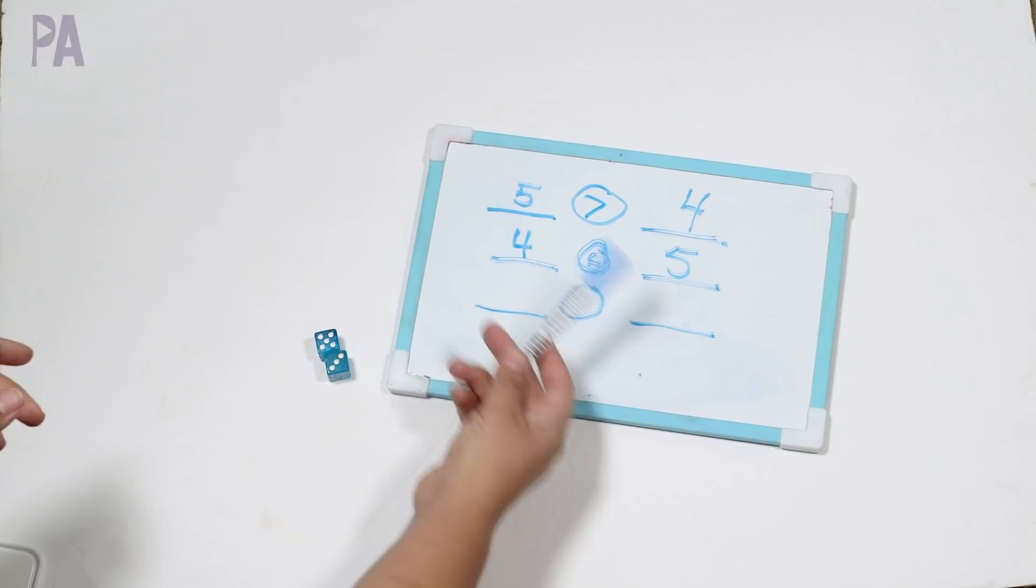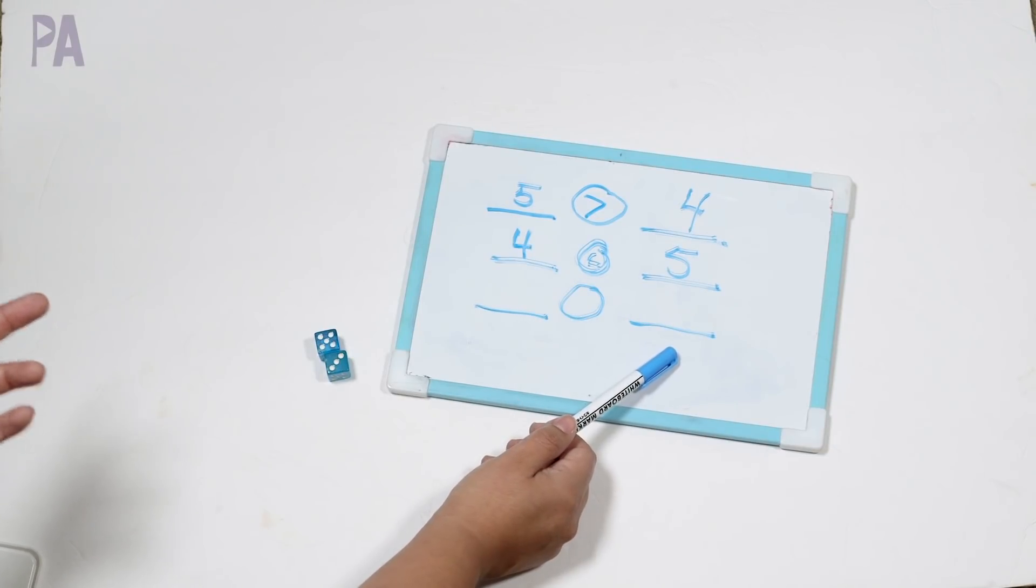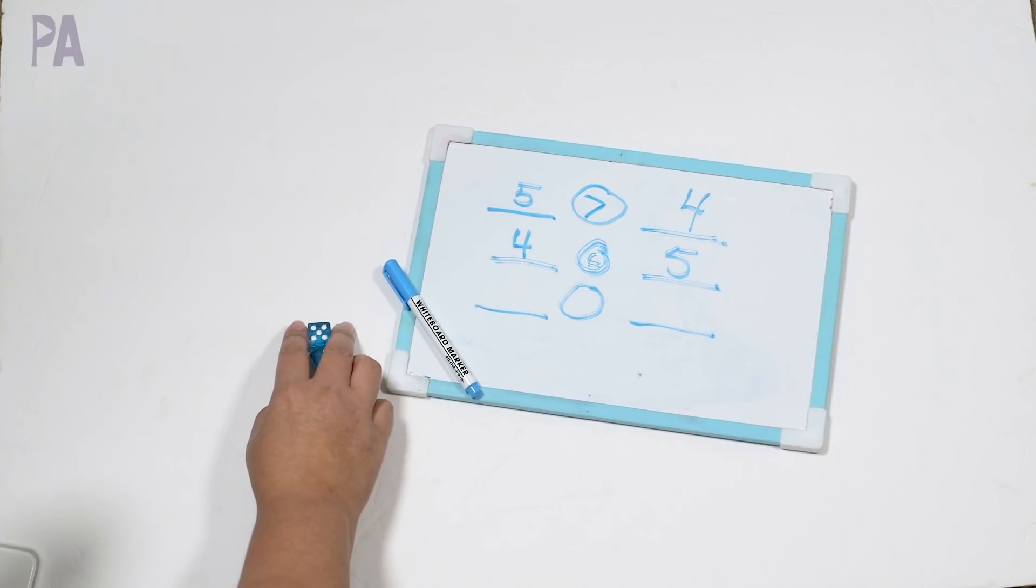So really easy, really simple, and you can add a timer, make it fast, see how many you can get or who can complete it the quickest. It's a really fun thing. So that is a greater than or less than activity.